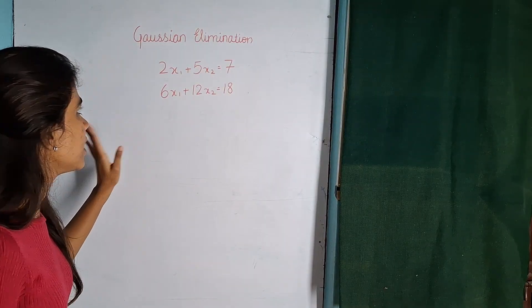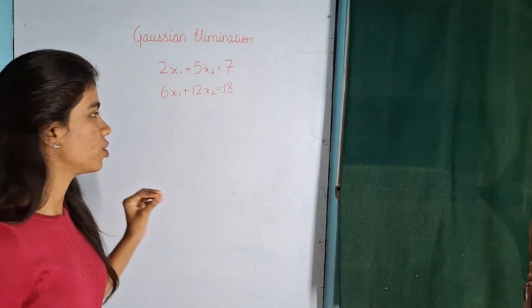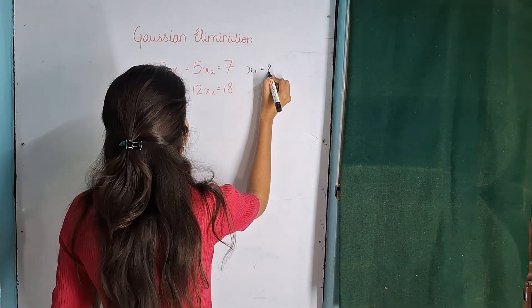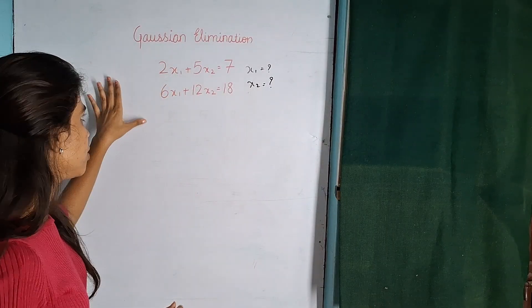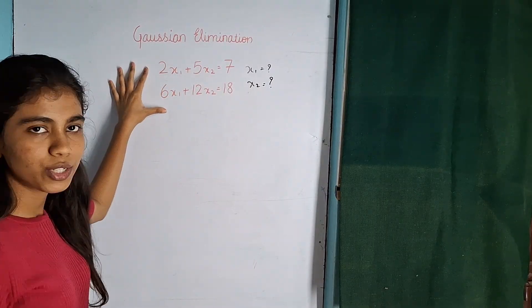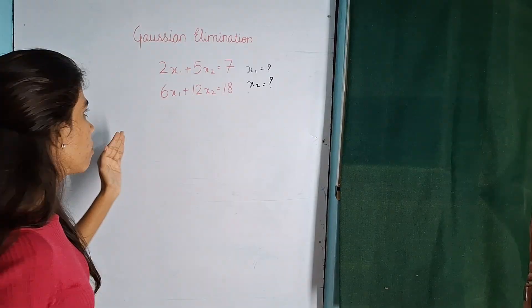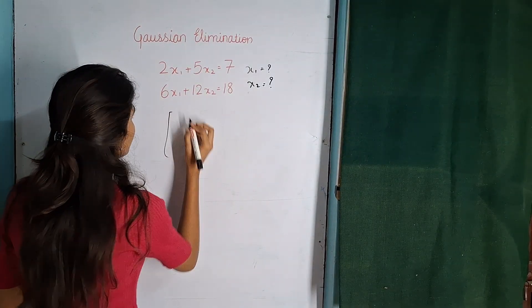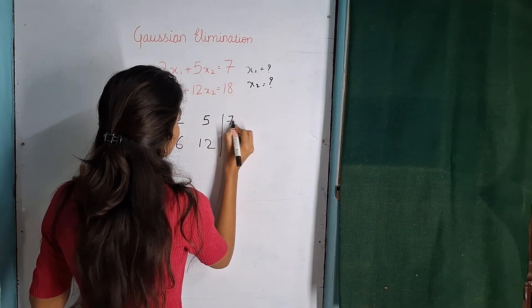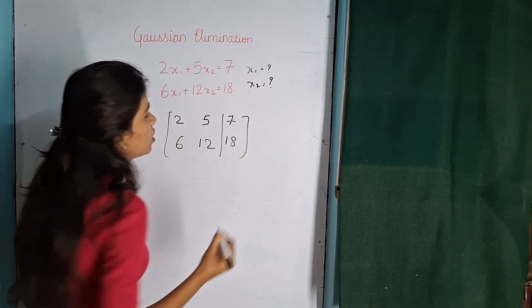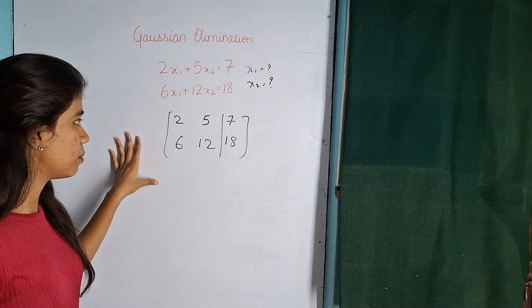So this is the equation and your main aim in Gaussian elimination is to find x1 and x2. So this is the aim of the Gaussian elimination. Now what you are going to do, whatever equation you have given, you are going to form an augmented matrix out of it. So 2, 6, 5, 12, 7, 18. So this is your augmented matrix. This is as simple as this.